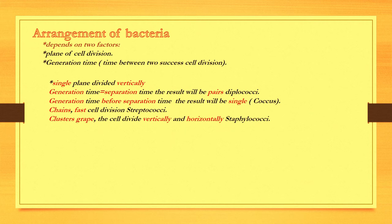It is divided before the coming of the return of the generation time, so we find the shape of the bacteria just like a cord and the cells are attached to each other. The bacteria that resemble a grape picking, which is the staphylococci, is divided vertically and horizontally.